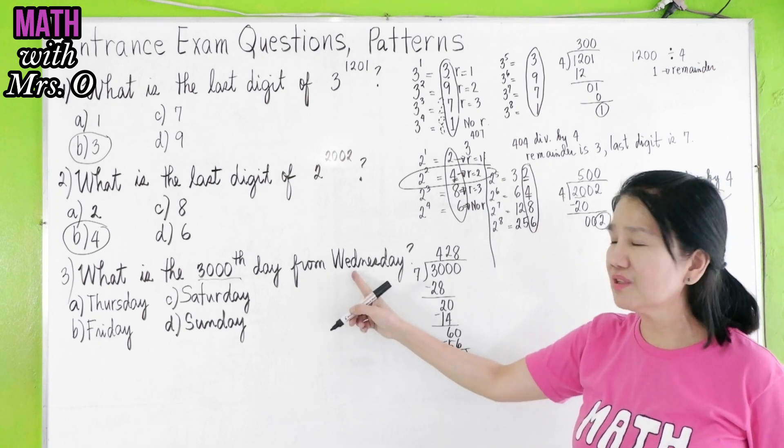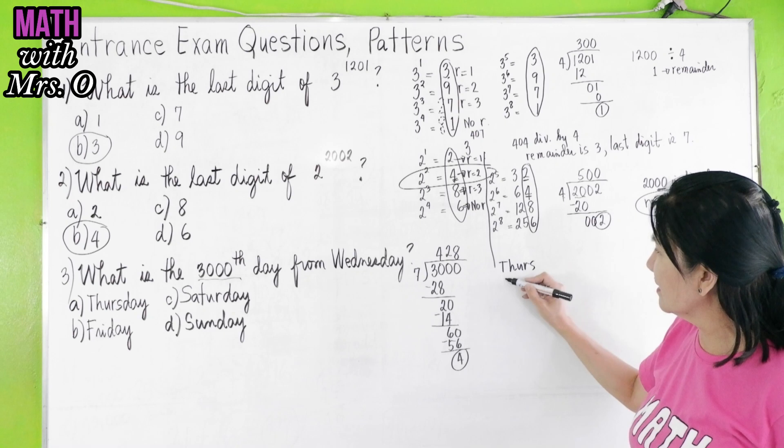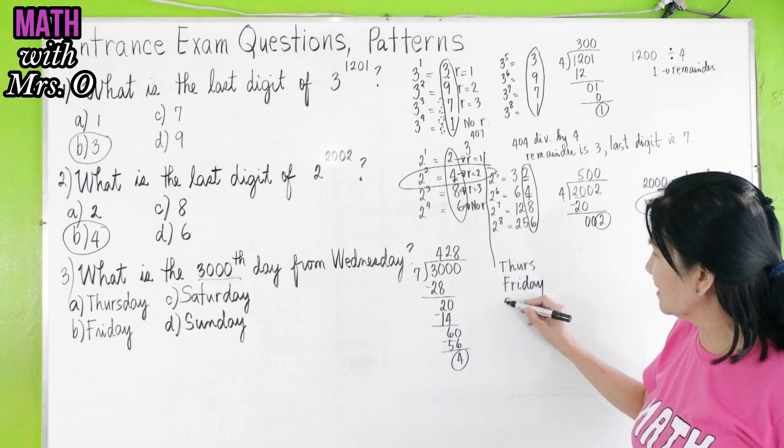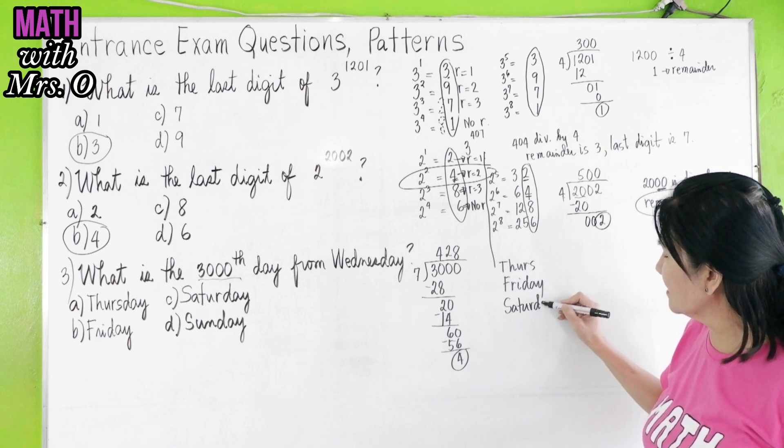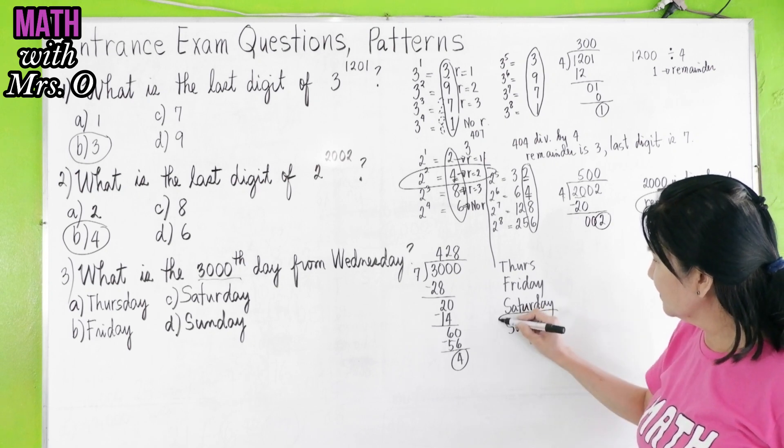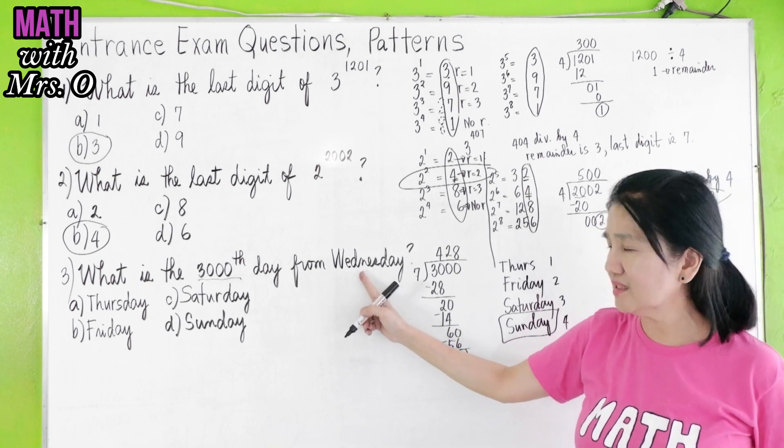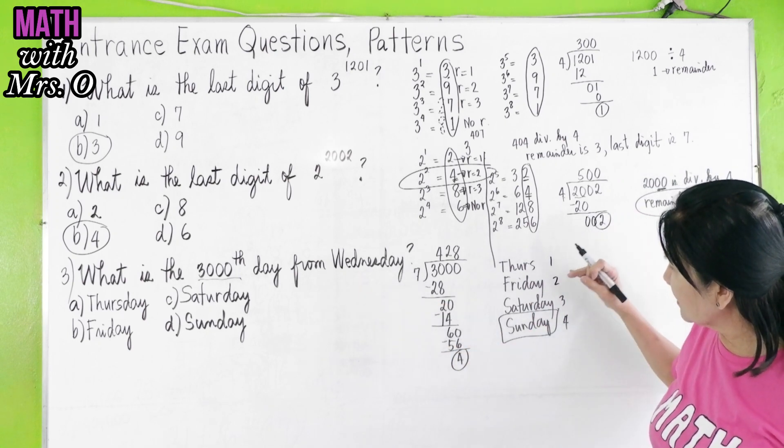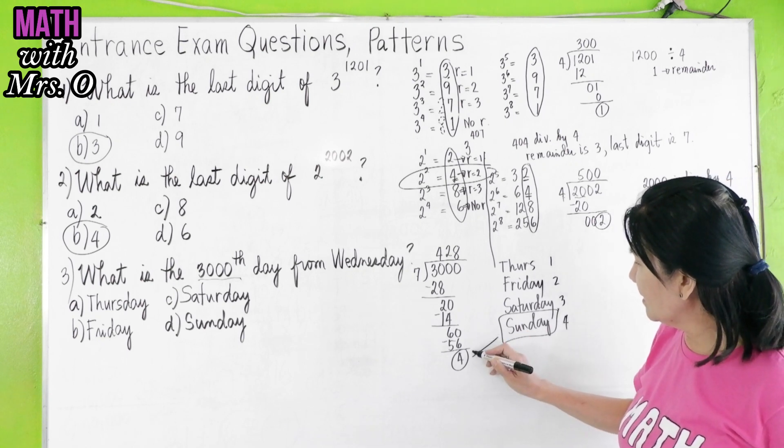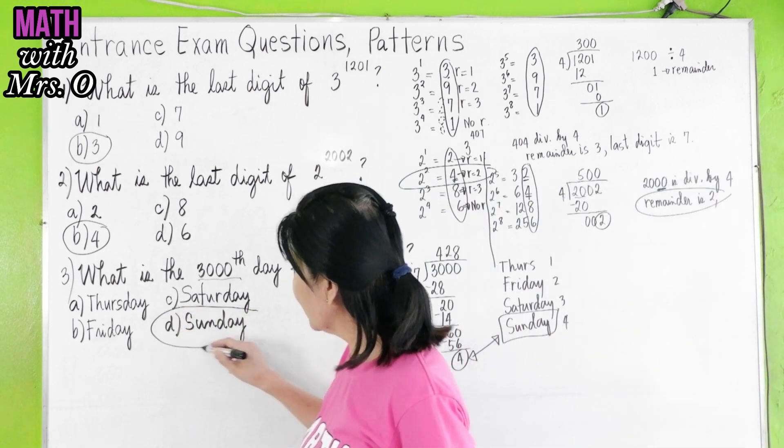Now you start counting from Wednesday. The next day is Thursday, then Friday, then Saturday, next is Sunday. 1, 2, 3, 4. Again, we start from Wednesday. The next is Thursday, Friday, Saturday, Sunday. The fourth remainder here is Sunday. So the correct answer here is Sunday.